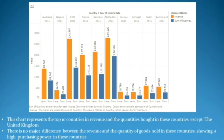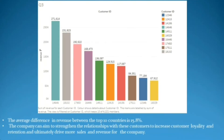The third chart, with reference to question number 3, represents that the average difference in revenue between the top 10 countries is 15.8%. It also represents that the company can aim to strengthen the relationship with customers to increase customer loyalty and retention, ultimately driving more sales and revenue for the company.